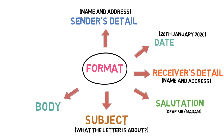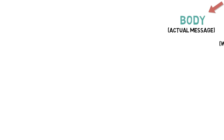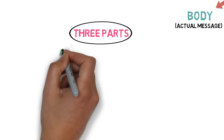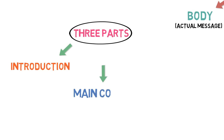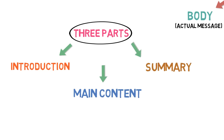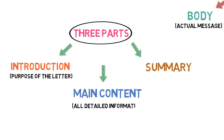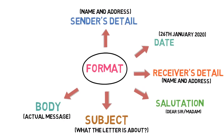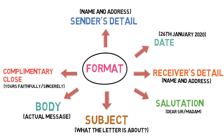Number 6 is the body. The body of the letter contains the actual message. It is usually divided into three subcategories: Introduction, Main Content, and Summary. The introduction paragraph states the purpose of the letter. The main content conveys all the necessary details, and the last paragraph summarizes the information provided. Number 7 is complimentary close — it is the way to end the letter, basically meaning goodbye. Use 'Yours faithfully' if you don't know the person, and 'Yours sincerely' if you do know the person.